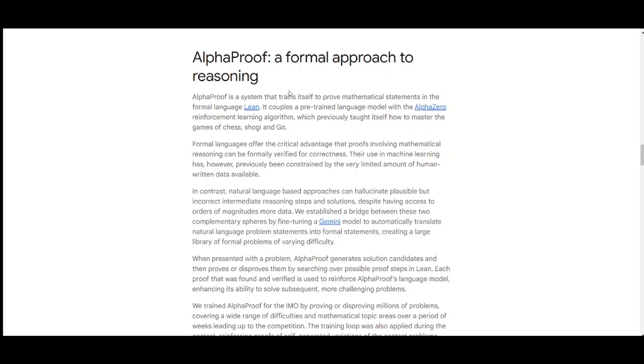According to Google, AlphaProof is a system that trains itself to prove mathematical statements in the formal language Lean. For those who do not know, Lean is a functional programming language that makes it easy to write correct and maintainable code which also can be used as an interactive theorem prover.